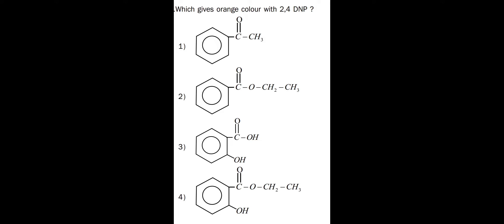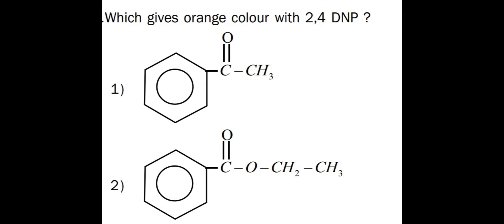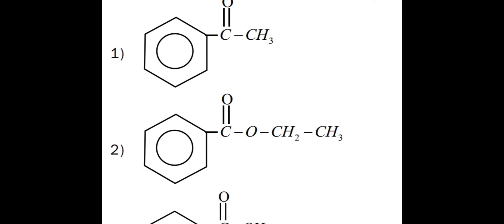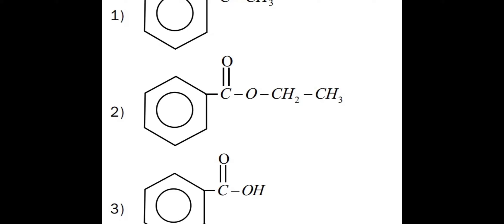The 2,4-DNP test gives an orange color and is given by carbonyl compounds — that means aldehydes and ketones. Option one is a ketone, so that qualifies. Option two appears to have a C=O group, but that is actually an ester group, not a carbonyl compound in this context.